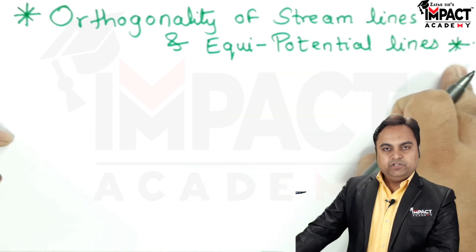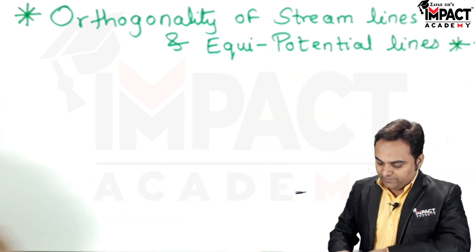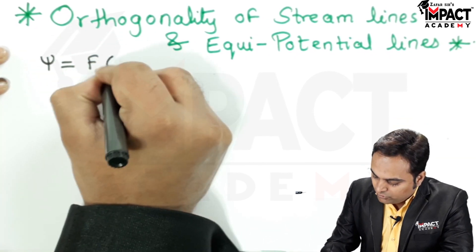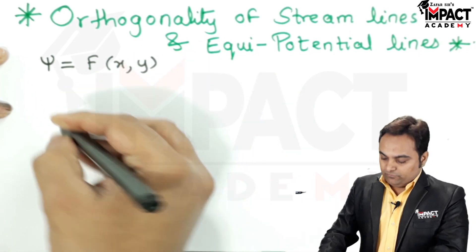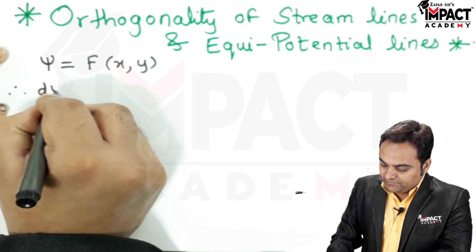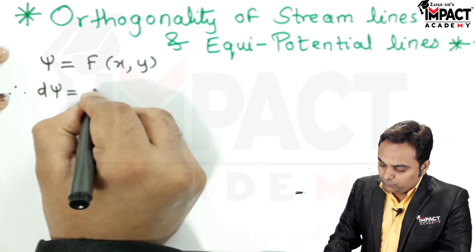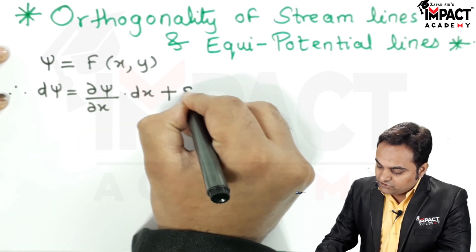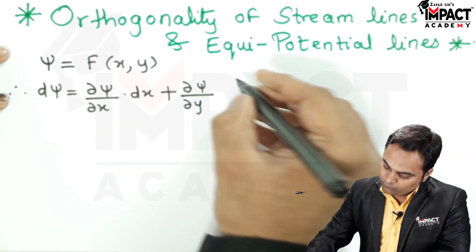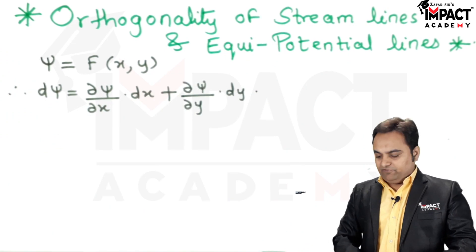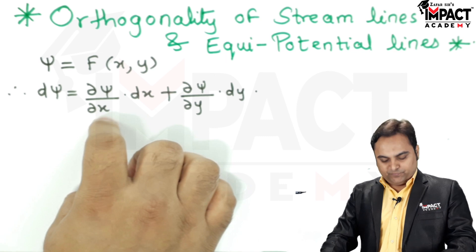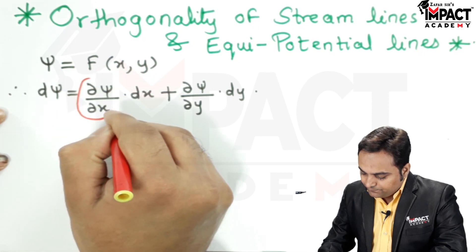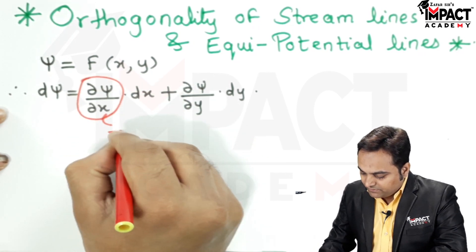In order to prove that streamlines and equipotential lines are perpendicular, first I'll start with the streamline. The stream function chi is a function of both x and y directions. Differentiating it, I get d chi, and since it depends upon x and y, it would be partial differentiation: partial chi with respect to x, plus partial chi with respect to y. As per the definition of chi, when differentiated with respect to x it gives us the velocity in the negative y direction, meaning d chi by dx is minus v.